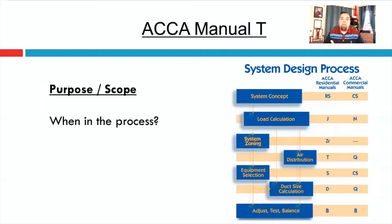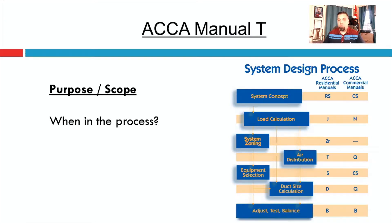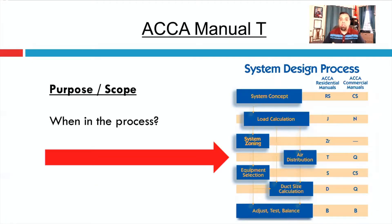This manual is part of the residential design process. It can apply to the commercial side as well, but there is far more expanded commercial air distribution information in Manual Q. Manual T really focuses on the residential portion, maybe some small commercial applications like a small cafe with duct distribution. In the process, Manual T falls after you do your load calculation and before you do your duct sizing — Manual D.